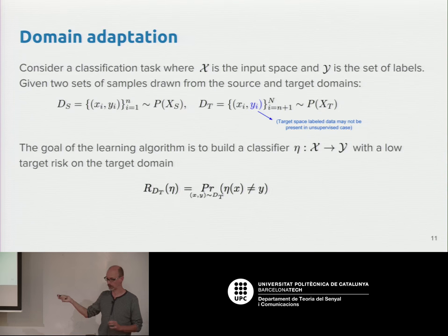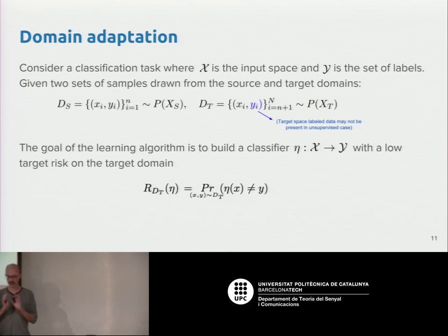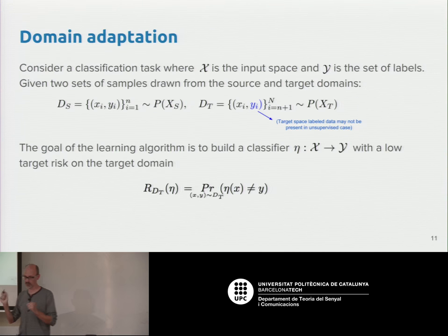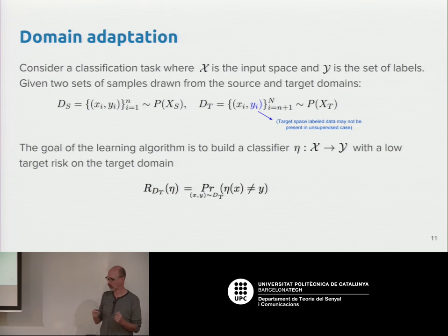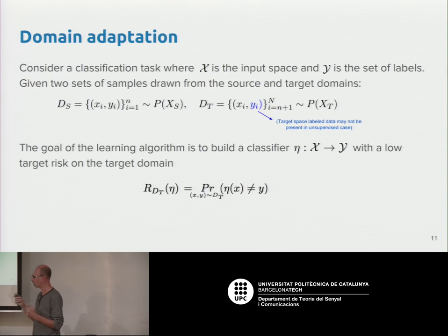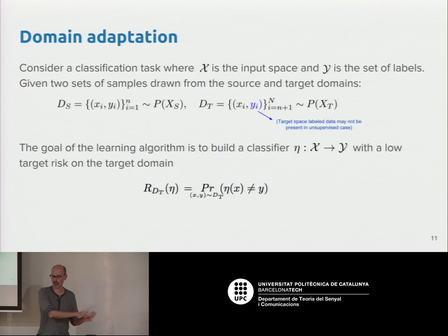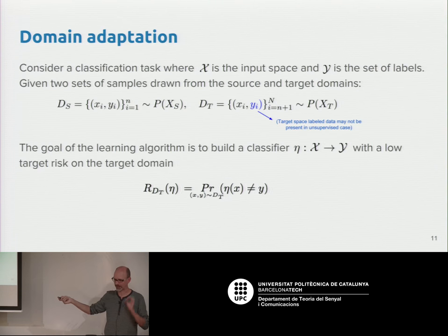In this transfer learning approach, we don't care at all about performance on the source domain after the transfer of knowledge. We take the source model, adapt it to the target domain, and the goal is to optimize performance on the target domain. Next week I will discuss what happens when we want to keep performance on both the source and target domains — that is a different problem.